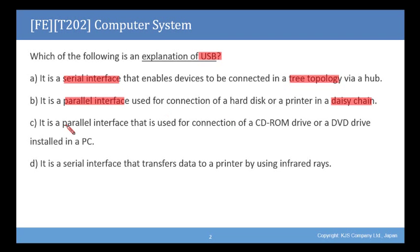Is it C, it is a parallel interface that is used for connection of a CD-ROM drive or a DVD drive installed in a PC? Or D, it is a serial interface that transfers data to a printer by using infrared rays?